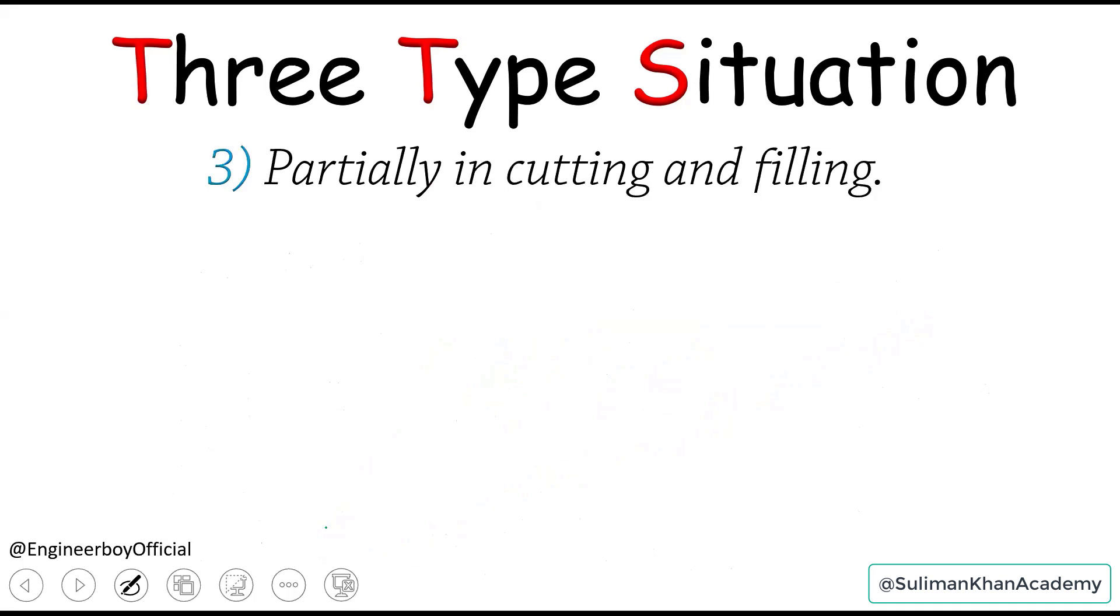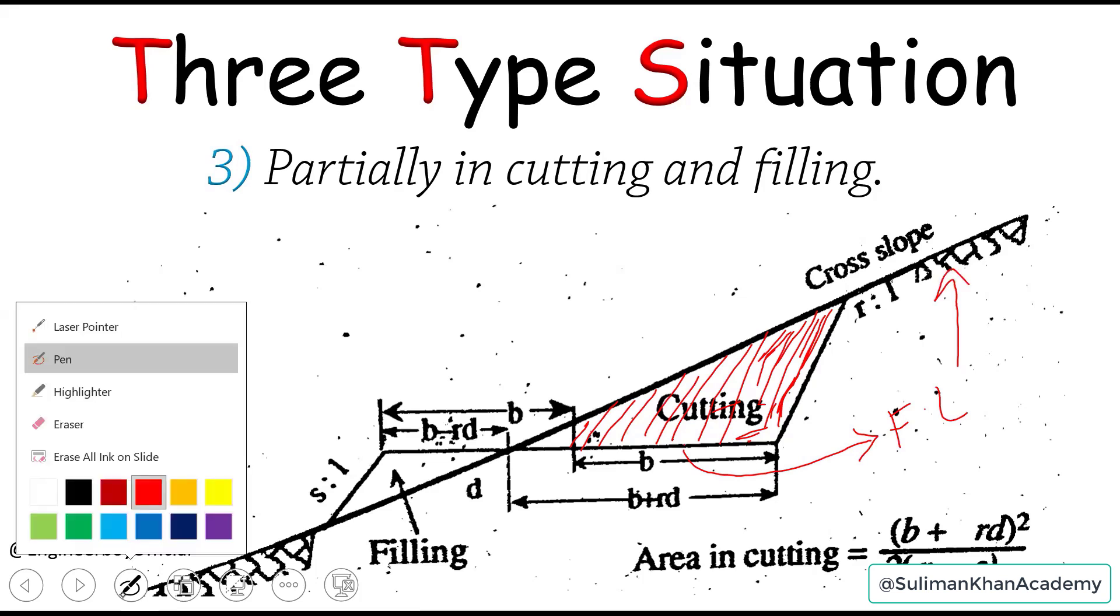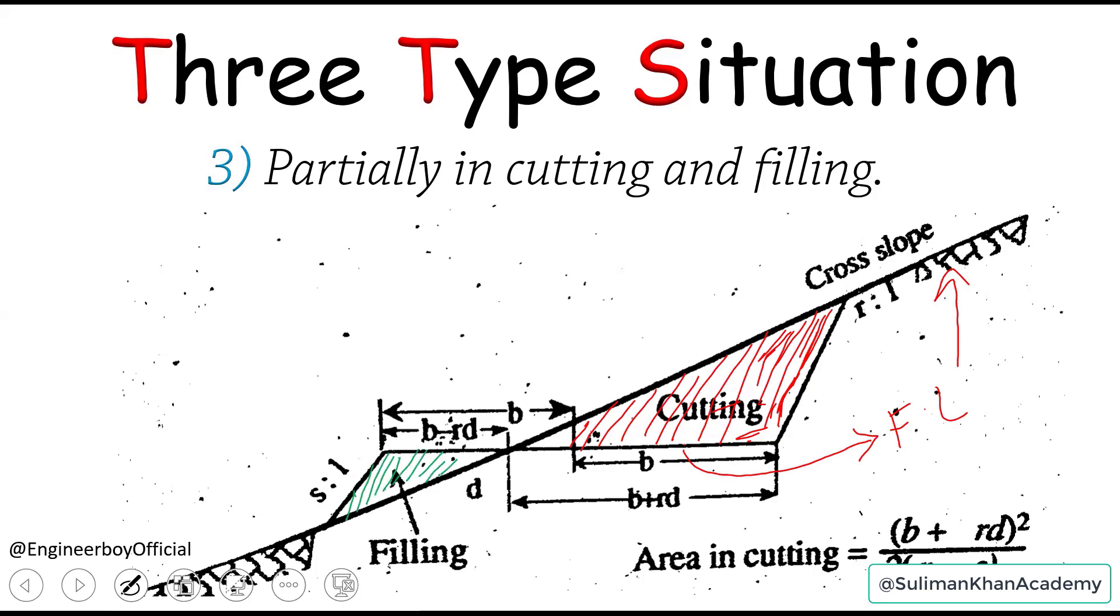And then there can be the condition where we may have both conditions at the same time, like cutting and then filling as well. Here, as you can see, we have cutting. This portion can be in cutting. Let me shade it in red color because it is the same condition we just discussed - that is type 1. And here, as you can see, the formation level is just below the ground or the cross slope. However, if you look to the filling condition where this is filling, the green shaded area. Here, the formation level is just above the slope, which is the cross slope. So this is called partially in cutting and then in filling.